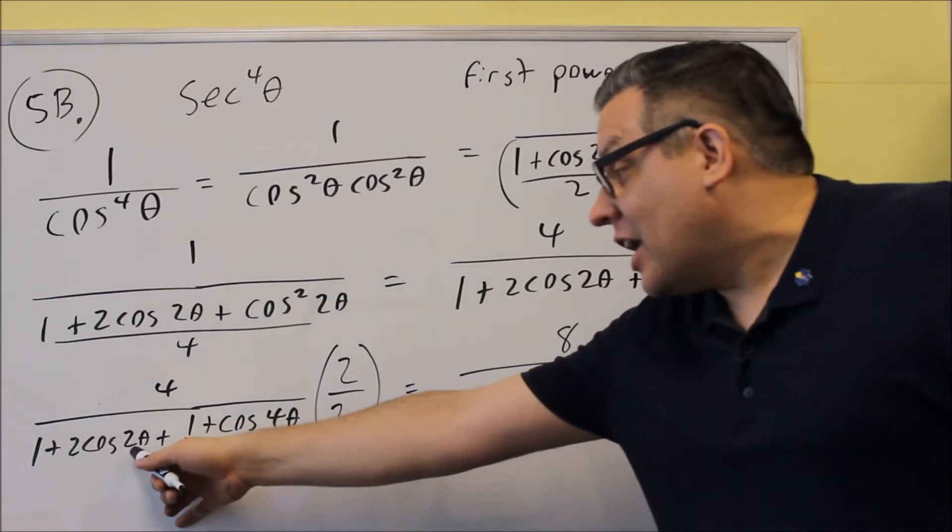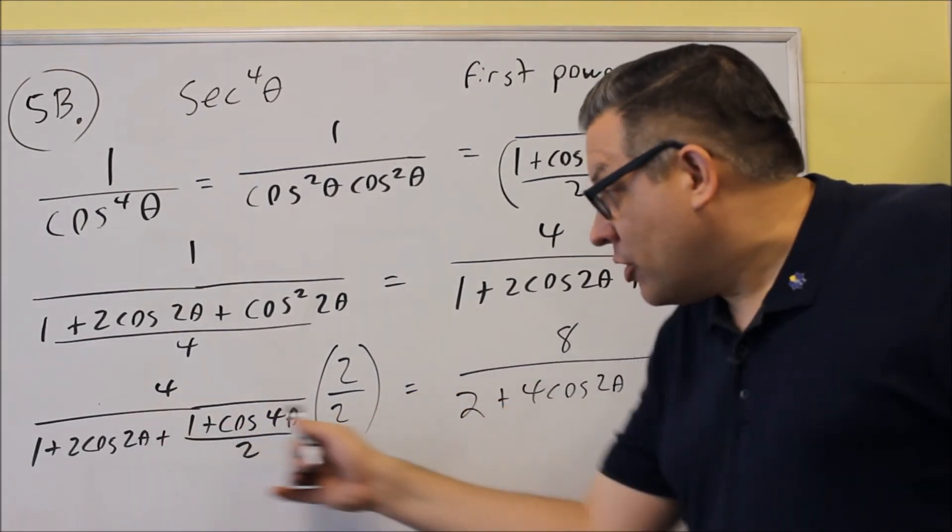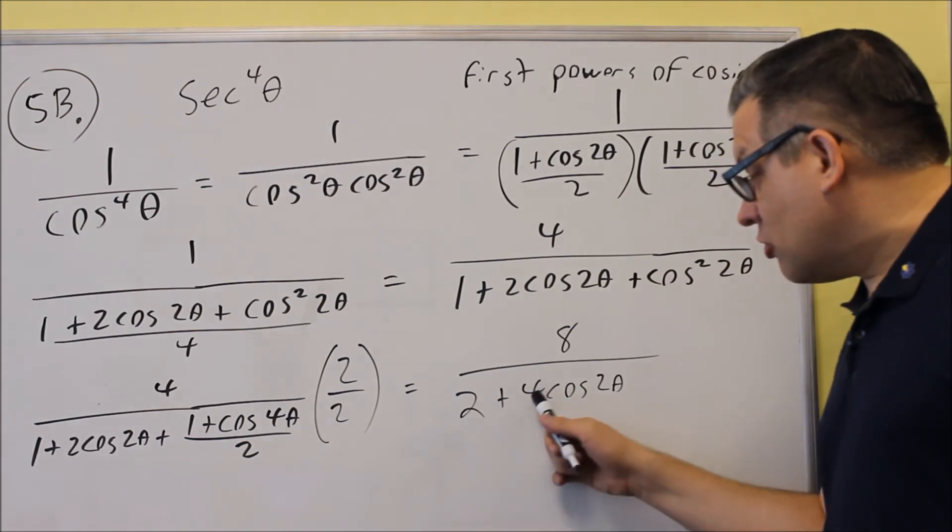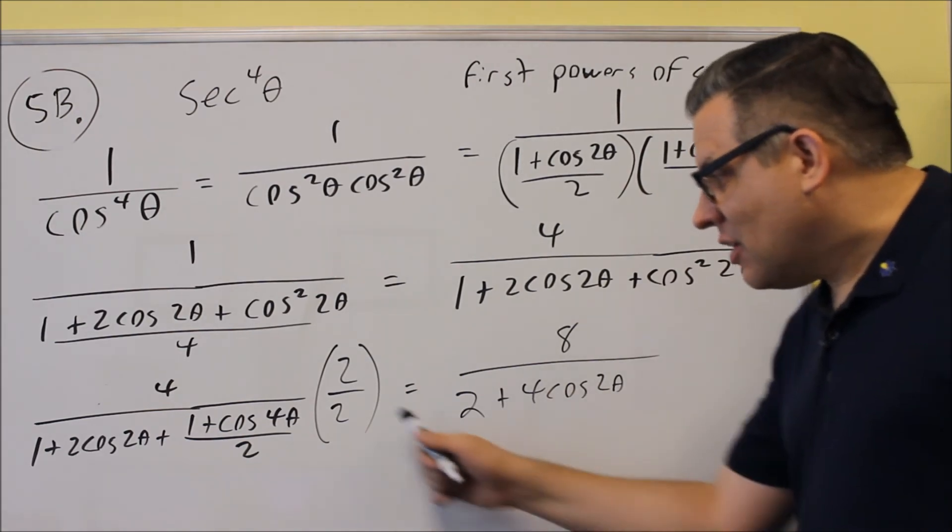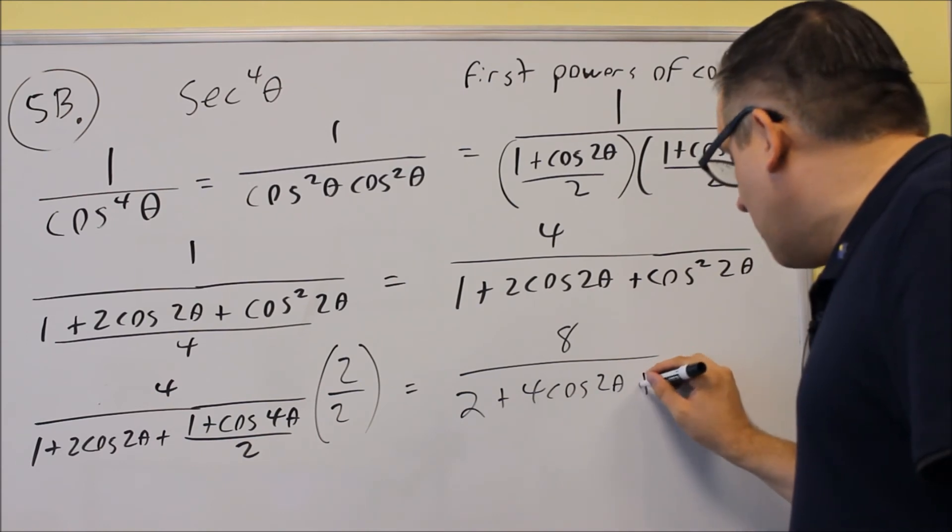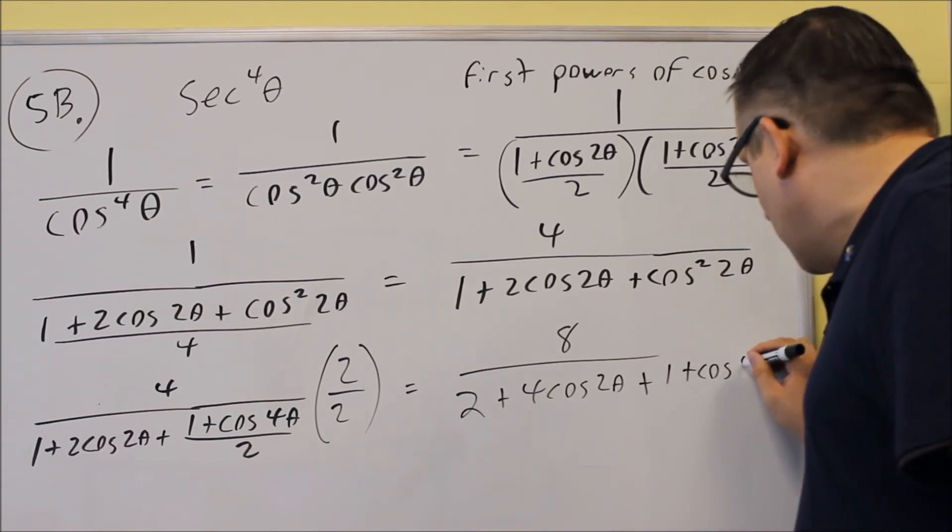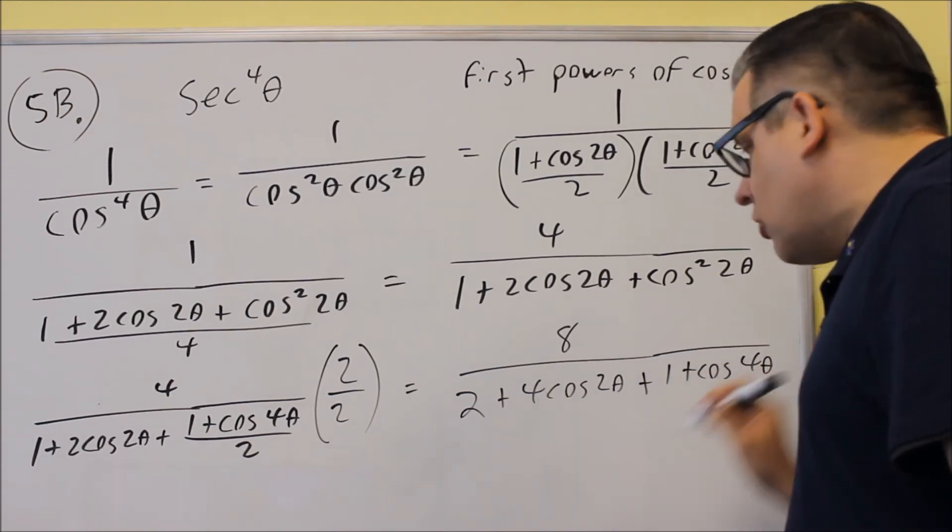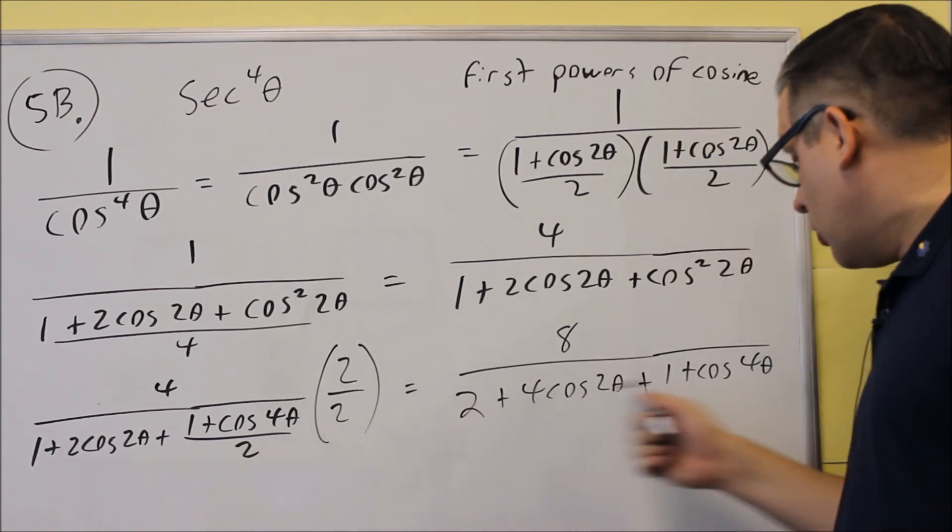We don't multiply the 2 by the part inside here. We just multiply by the one outside. So it'll just be 4 cosine 2 theta. This 2 here will cancel with the 2 down below. So you'll get plus 1 plus cosine 4 theta on the end. So the 2 basically just cancels out, and we're left with this.